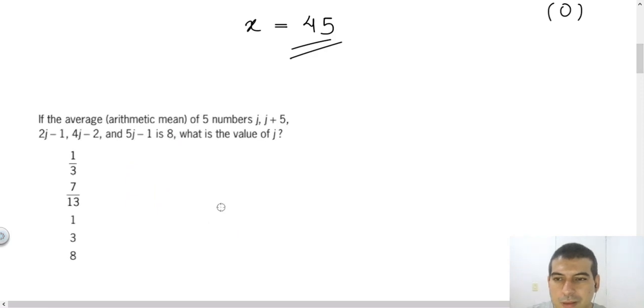In the second question, and the last that we will solve in this video, we have that the average arithmetic mean of five numbers: j, j plus 5, 2j minus 1, 4j minus 2, and 5j minus 1, equals 8. And the question asks us, what is the value of j?